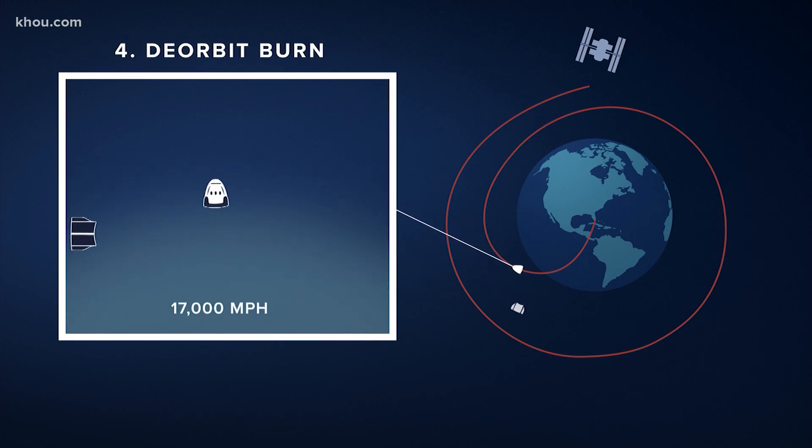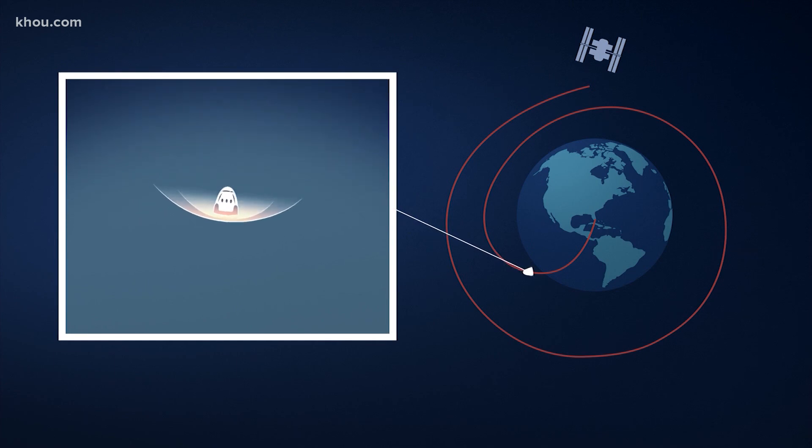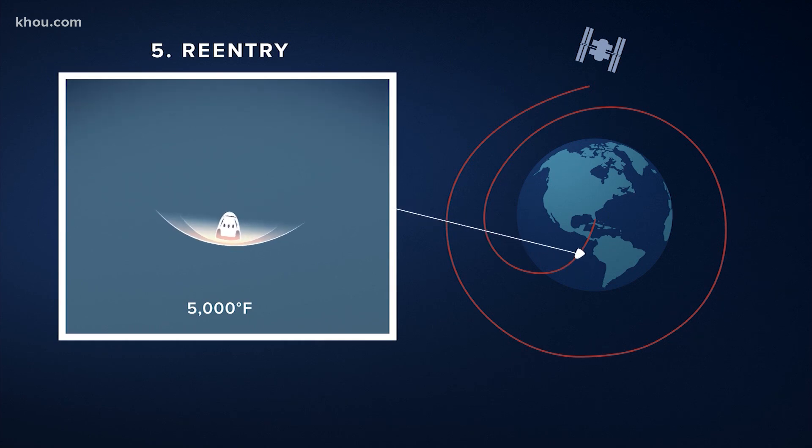Crew Dragon will enter the atmosphere around 17,000 miles per hour. The particles in the atmosphere will cause Dragon to slow down, but will also heat the outside of the spacecraft to more than 5,000 degrees Fahrenheit. That's hot enough to vaporize steel.